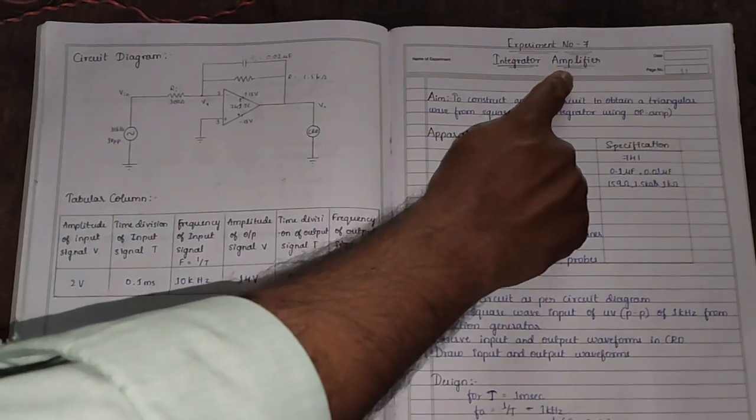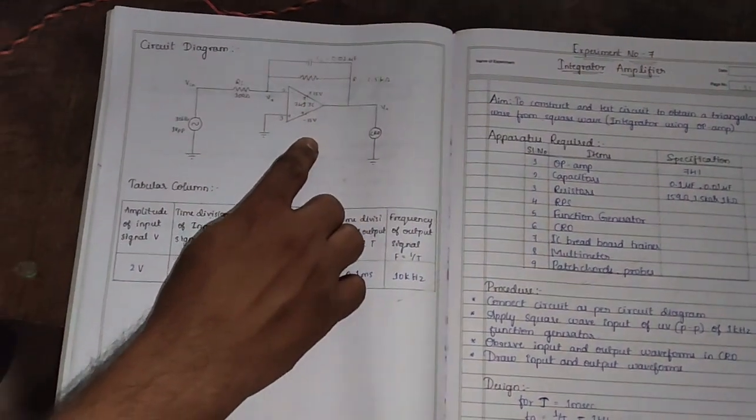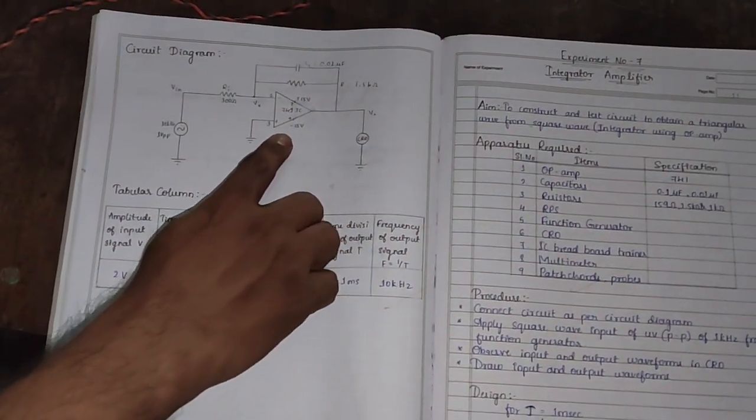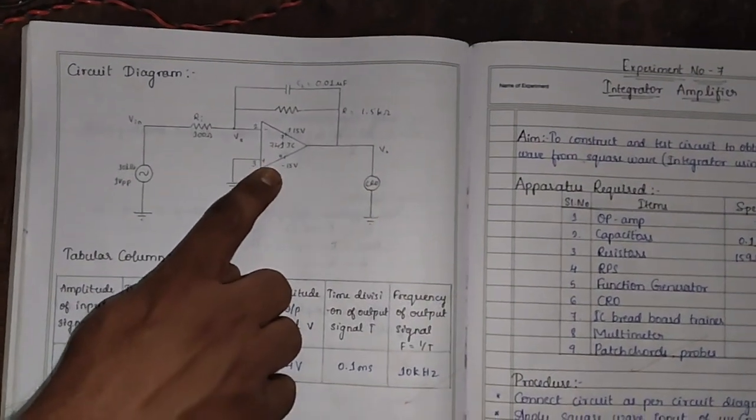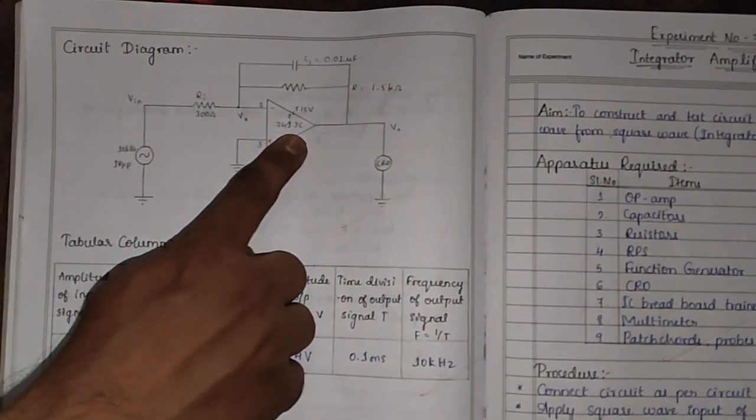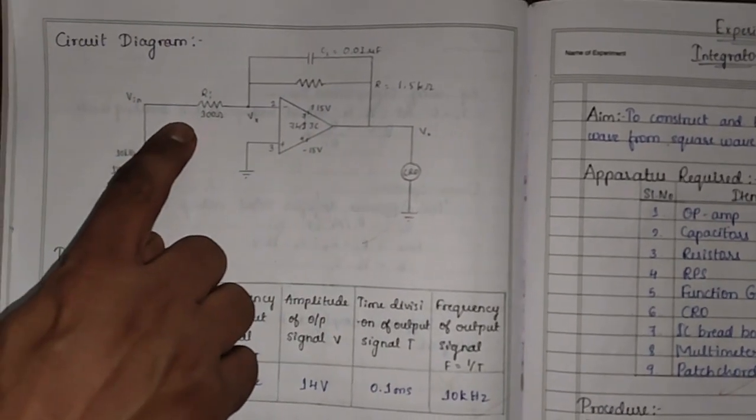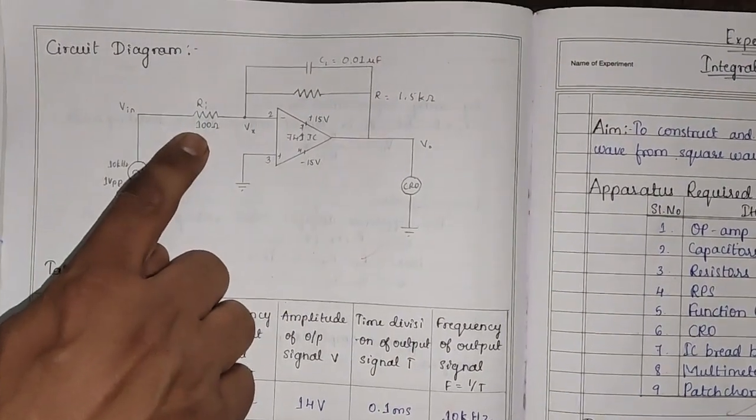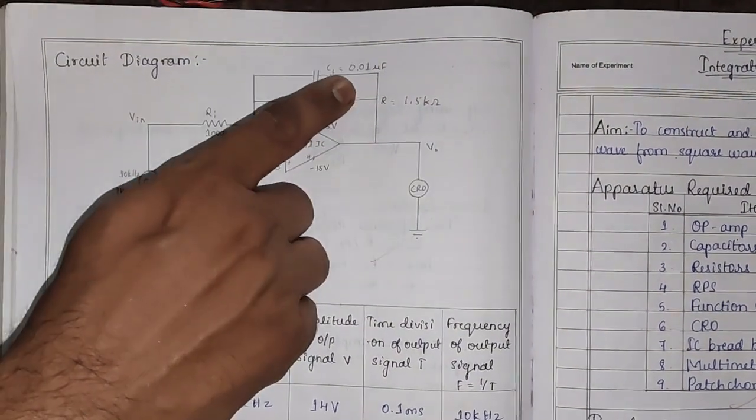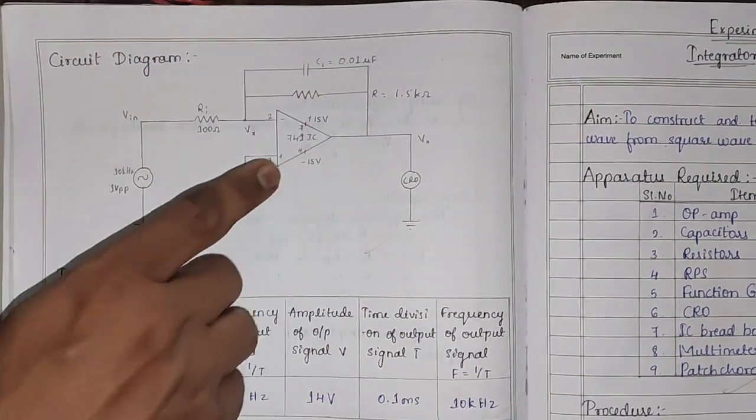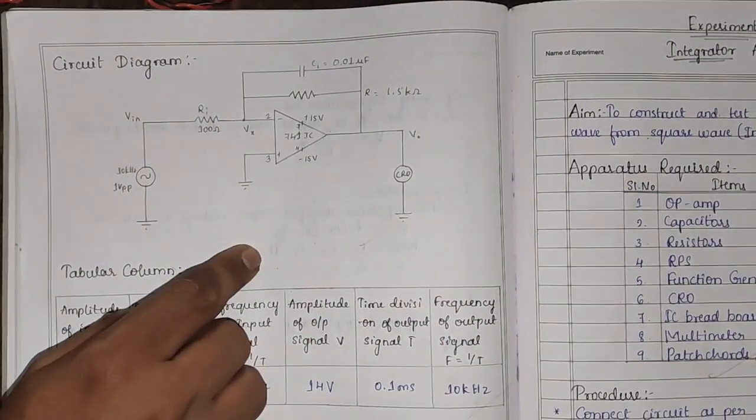This is Integrator Amplifier, also known as Integrator. Here we construct Integrator Amplifier with the help of Operational Amplifier IC, that is Op Amp 741. In this circuit we can observe that at the input 100 ohm resistor is connected. At the feedback, the capacitor C1 that is 0.01 microfarad and one resistor that is R 1.5 kilo ohm.